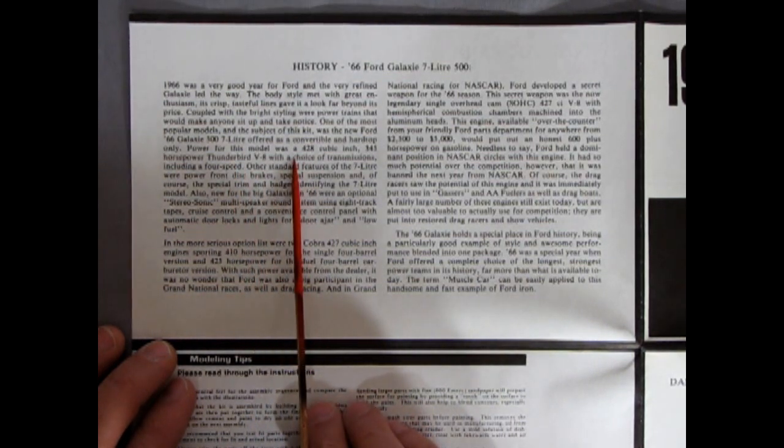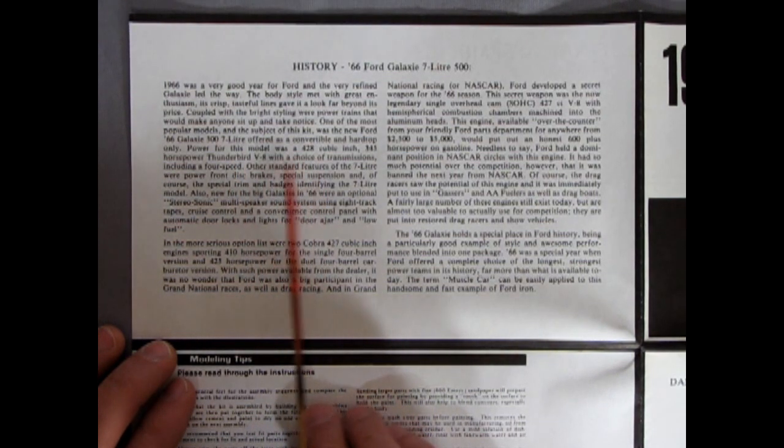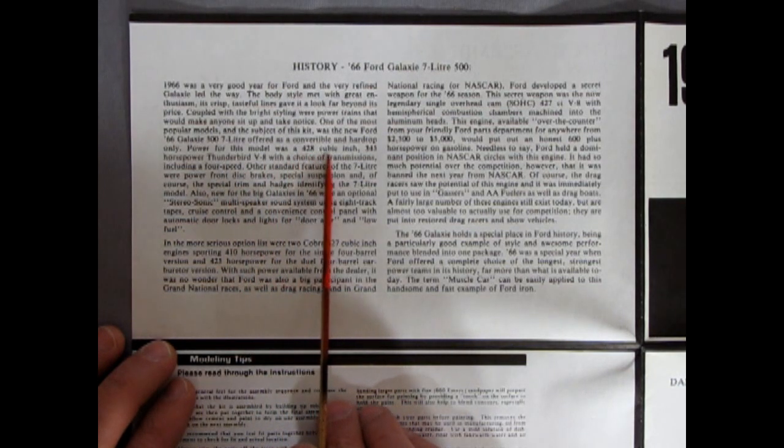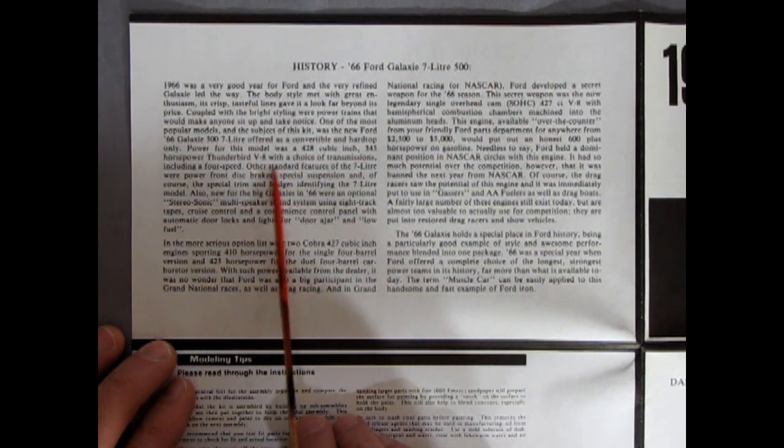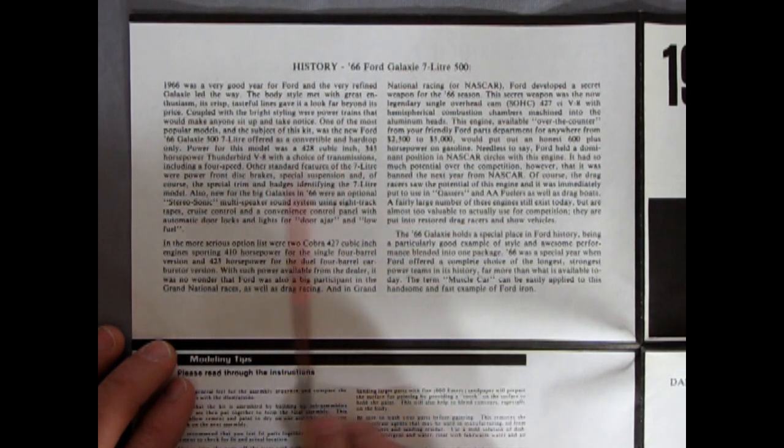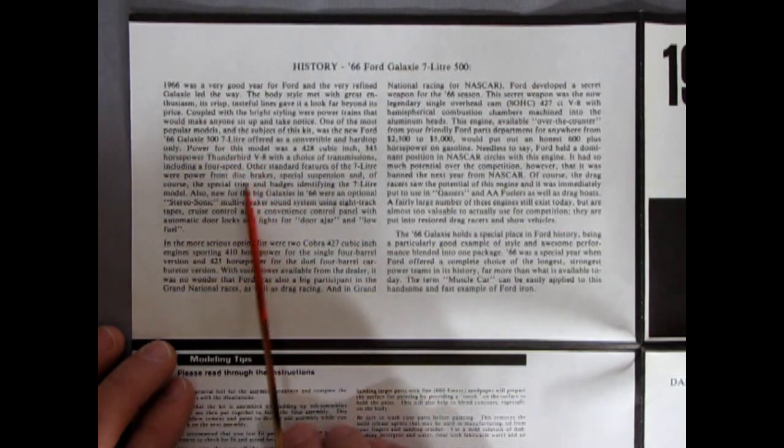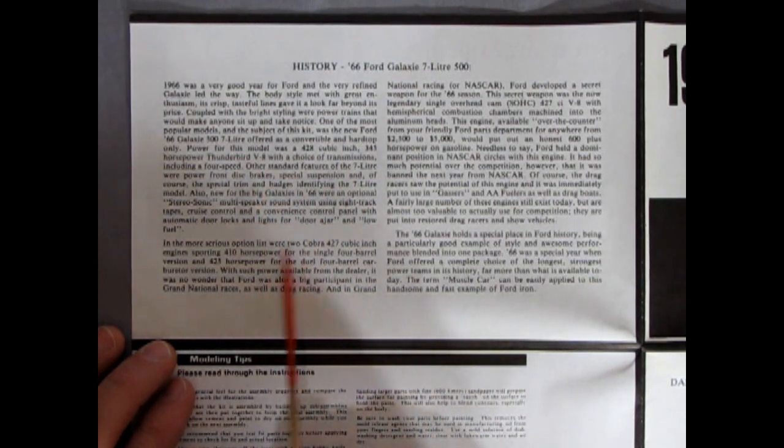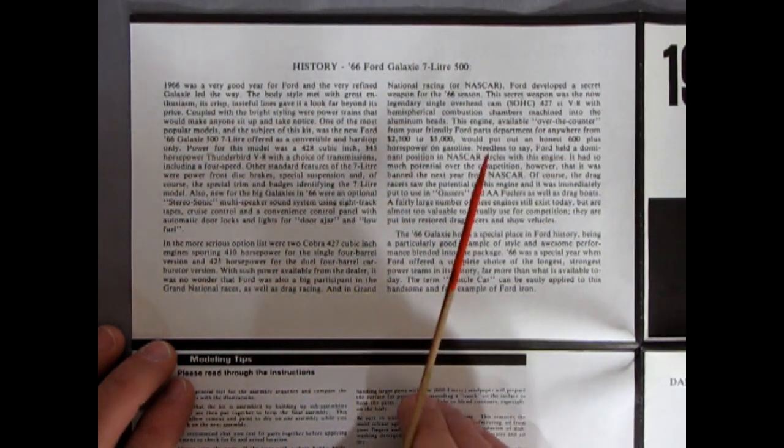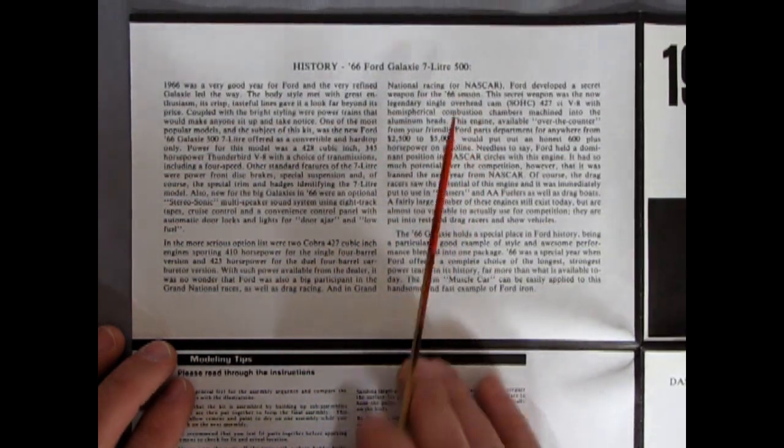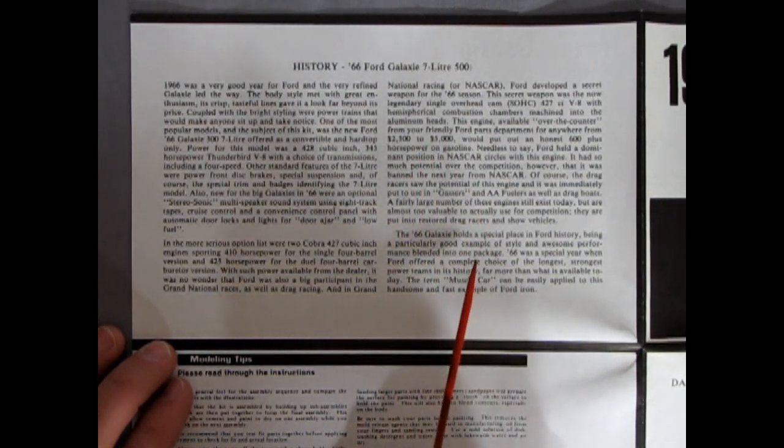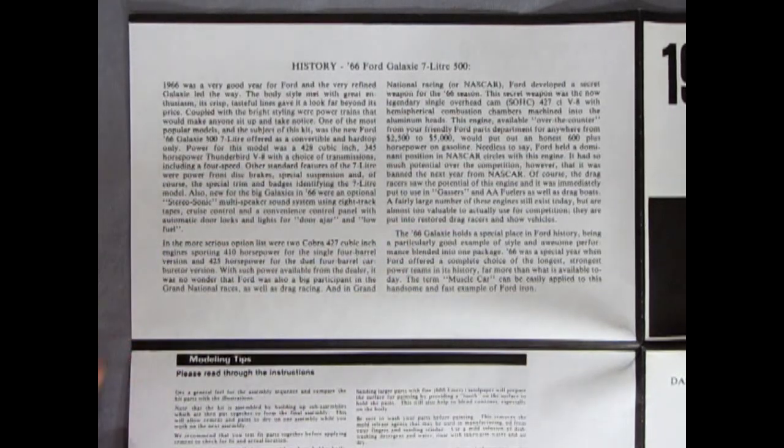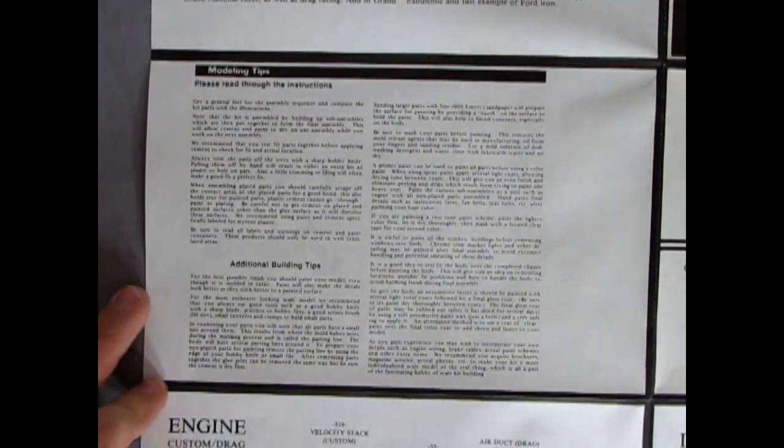And then it goes on. Talking about the Thunder... Power for this model was a 428 cubic inch, 345 horsepower Thunderbird V8 with a choice of transmissions. Let's go see. Yeah, okay. So, it talks all about this. AC Cobra 427 cubic inch engines. How it ended up in NASCAR. The price for putting one together for NASCAR. And all kinds of other cool things going on there.